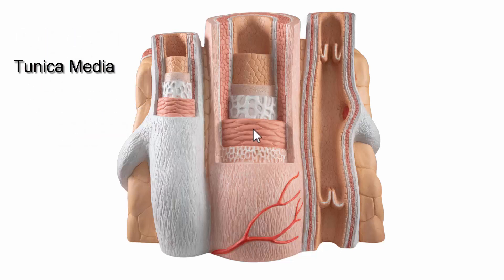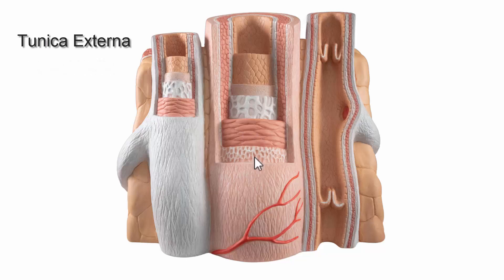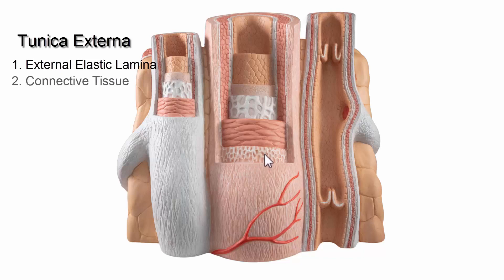The tunica media of the artery has a much thicker muscular layer of smooth muscle. The tunica externa includes an external elastic lamina and a connective tissue layer of elastic fibers.